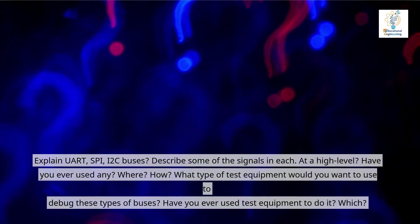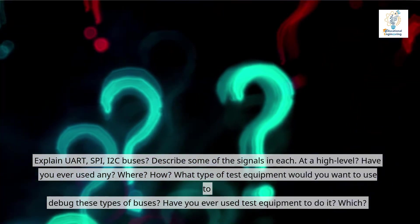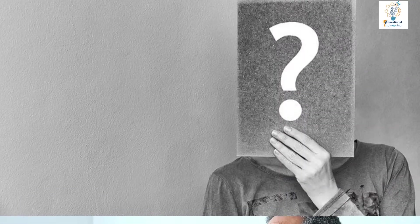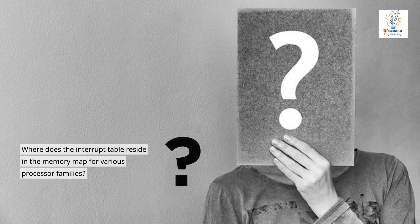Have you ever used test equipment to debug buses? Which? Explain how DMA works. What are some of the issues that you need to worry about when using DMA? Where does the interrupt table reside in the memory map for various processor families?